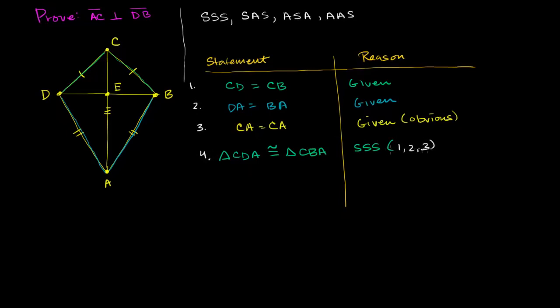By the side-side-side postulate and statements 1, 2, and 3, we know that triangle CDA is congruent to triangle CBA. And if these triangles are congruent, then all of their corresponding angles are equivalent.